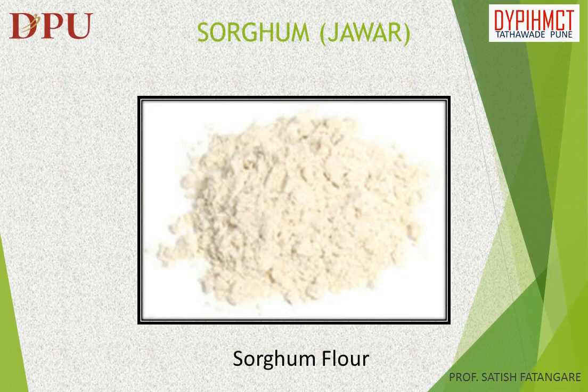In this slide we will discuss about sorghum or javar. Sorghum is a genus of flowering plants in the grass family which includes about 25 species. Some of these species have grown as cereals for human consumption and some in pastures for animals.